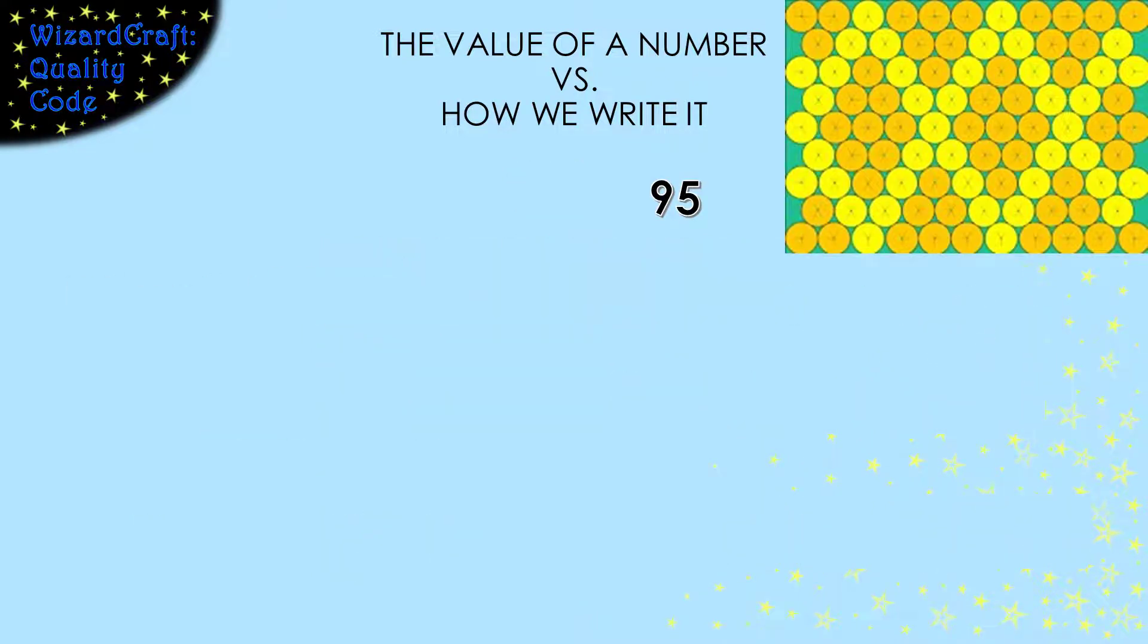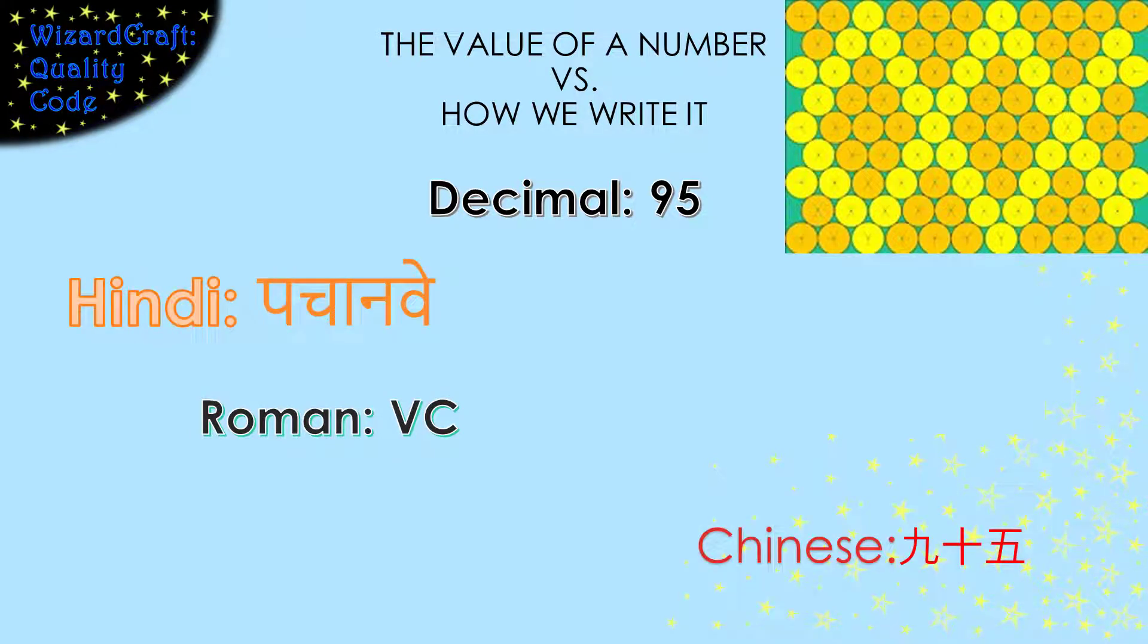The system for writing numbers that we're used to is called decimal, and we'll explain why in a minute. But there are lots of ways of writing something that means that same quantity. For example, in Roman numerals, the quantity 95 is written VC. I won't even attempt to say how Chinese and Hindi write that quantity, but no matter what it looks like, those represent the same number of circles that our 95 represents.